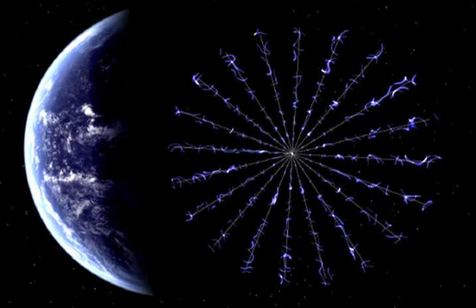In the e-sail, the part of the sail is played by straightened conducting tethers made of wires which are placed radially around the host ship.